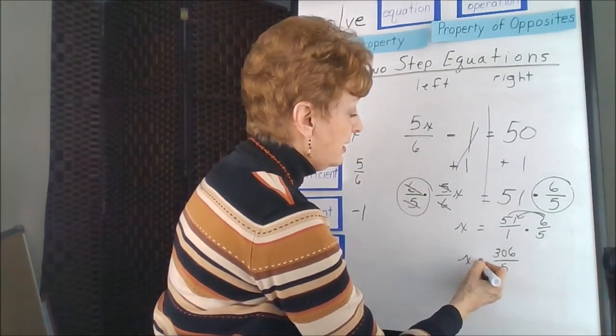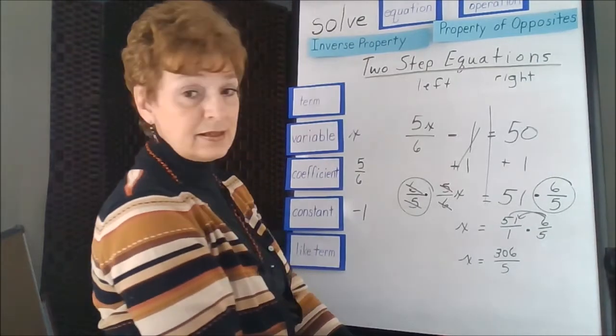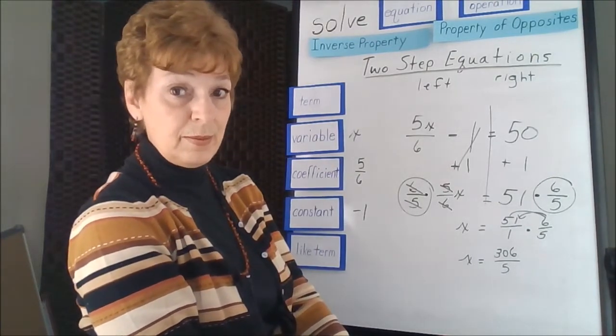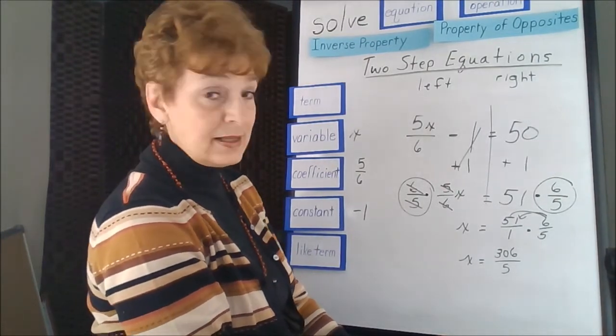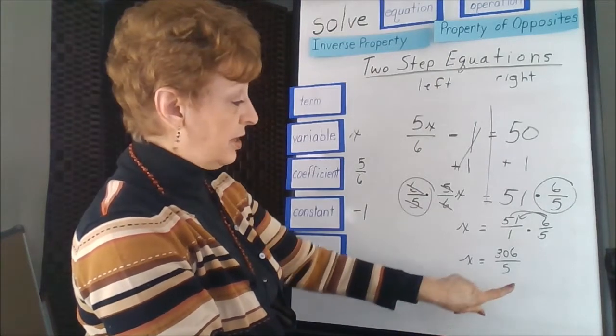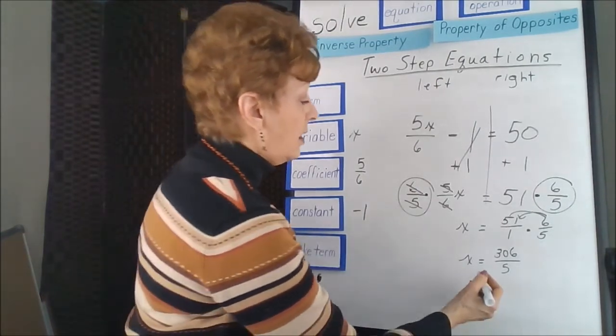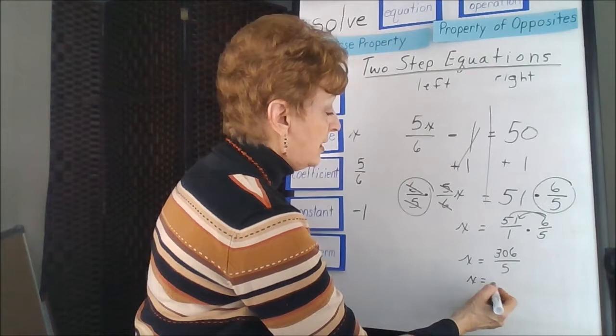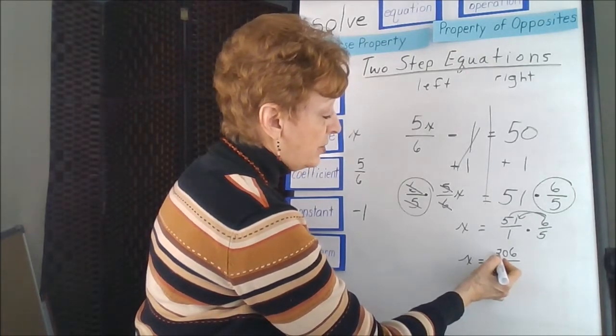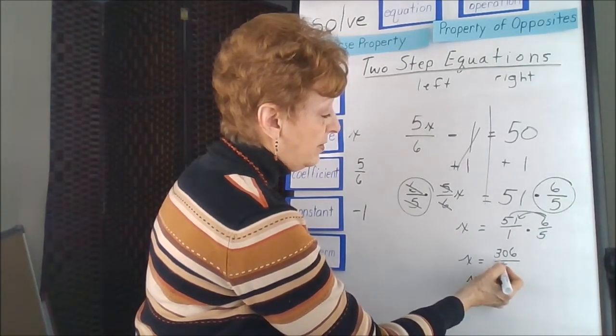So we have x is equal to 306. A huge improper fraction. But it's easy to do finger division to get this into lowest terms. x is equal to 5 divides into 3. Too small. 5 divides into 30.